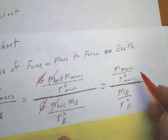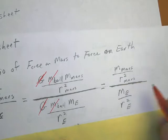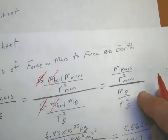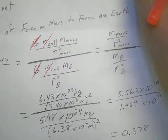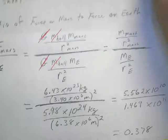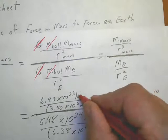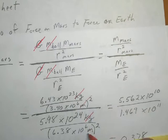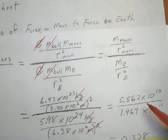So I put in the numbers down here. You end up, if we look at our units, you've got kilograms up here that will cancel out the kilograms down here. You'll have meters squared here which will cancel meters squared here, so you're left with two unitless numbers for the ratio, which is 5.562 times 10 to the 10th divided by 1.469 times 10 to the 11th. If you divide these two numbers, you end up with the ratio of 0.378.